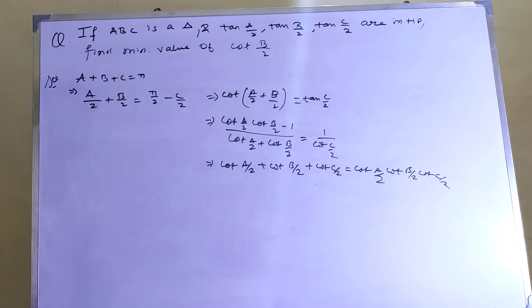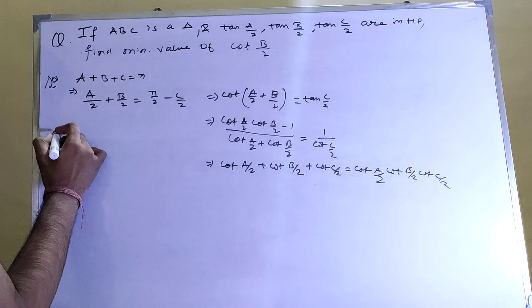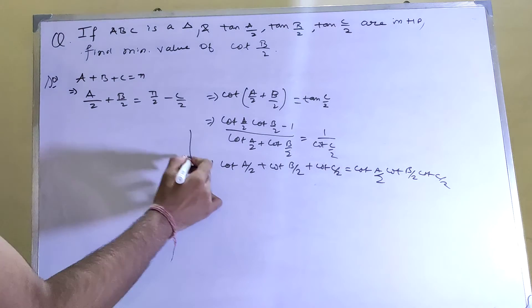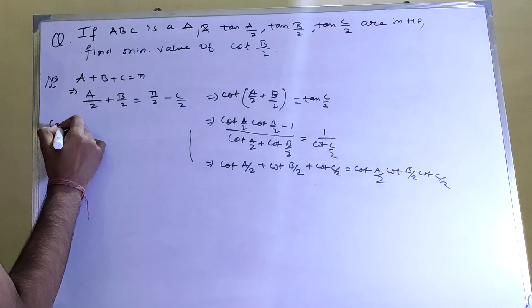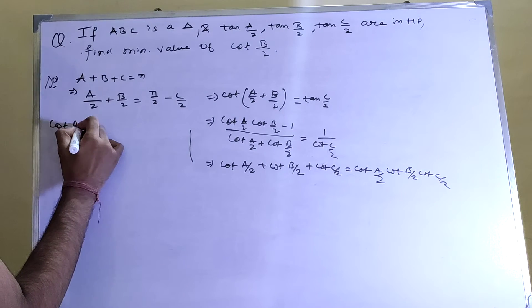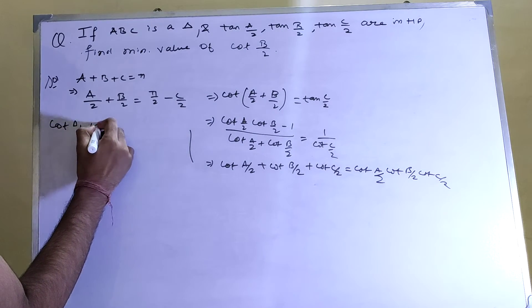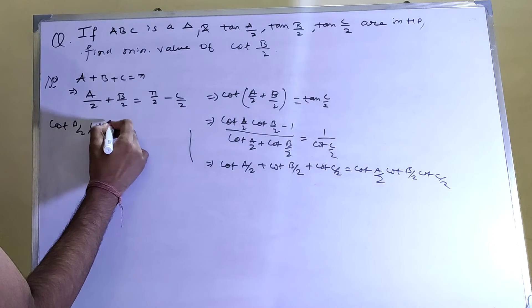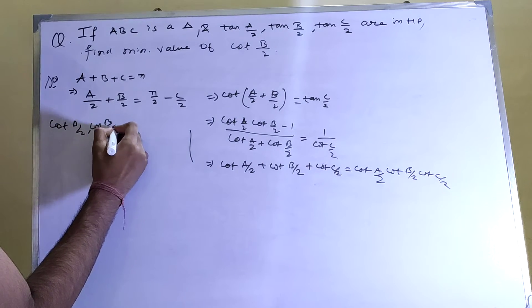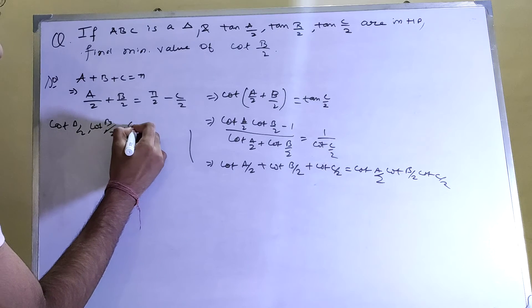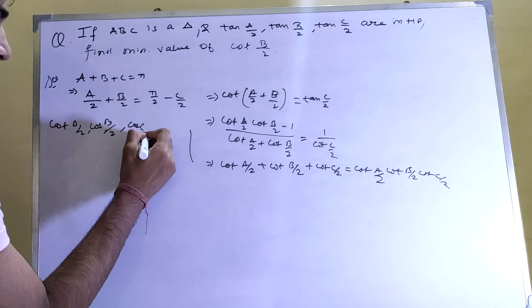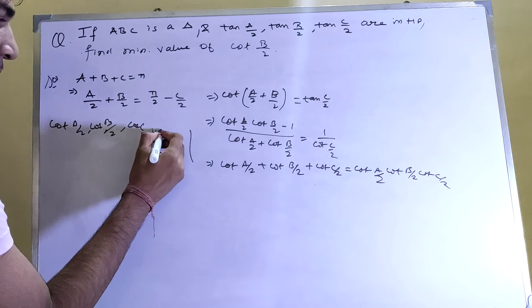Since tan(A/2), tan(B/2), and tan(C/2) are in HP, therefore cot(A/2), cot(B/2), and cot(C/2) are in AP.